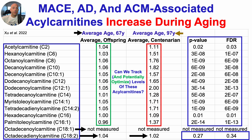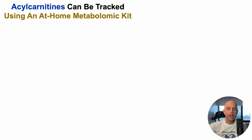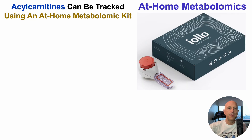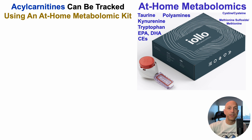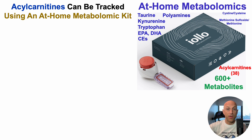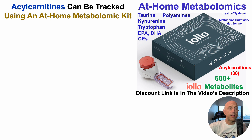So can we track and potentially optimize levels of these acylcarnitines? Acylcarnitines can be tracked using an at-home metabolomics kit. I've used it to measure levels of taurine and polyamines, which increase lifespan in rodents; kynurenine and tryptophan as markers of the NAD+ energy synthesis pathway; EPA and DHA, which decline during aging; cholesterol esters associated with epigenetic age; and metabolites related to oxidative stress. This kit includes 38 acylcarnitines and more than 600 metabolites total.